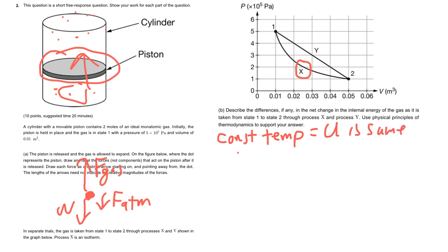Remember U is proportional to the temperature, so the greater the temperature, the greater the internal energy. Therefore for process X, temperature is the same, therefore the change in internal energy is zero—there's going to be no change in internal energy.